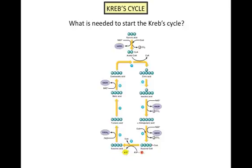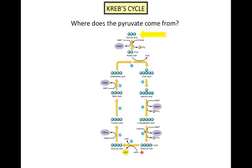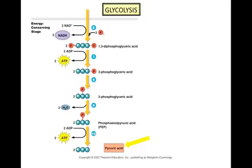In order to start the Krebs cycle — which generates the high-energy electron carrier molecules for the electron transport chain, in addition to a small amount of ATP — what do we need? Looking at the top of the diagram, you can see that the cycle starts with pyruvic acid, or pyruvate. Pause this video and watch the animation of the Krebs cycle on microbiologyplace.org in Chapter 5. Where does the pyruvate come from that is needed for the Krebs cycle to start? It is the end product of glycolysis, the first step in the process of cellular respiration.